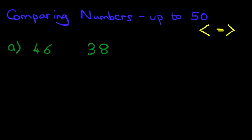What we're going to do is work through tens and units. We've only got two digits. For number 46, the 6 is a unit, so let's put U at the top, and the 4 is a ten. For number 38, the 8 is a unit and the 3 is a ten. The key is that the first thing you should do is always look at the digit on the left — in this case it's a 4, so there are 4 tens in 46, and there are 3 tens in 38. So we're comparing the tens: the 4 and the 3.